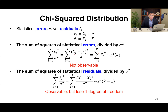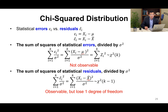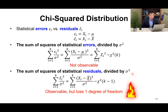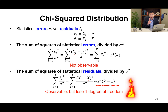However, this is generally not observable because we don't know the population mean. If we replace the population mean with the sample mean, this becomes the sum of squares of the statistic residues divided by sigma-square. This is also approximately chi-square distributed, but we lose one degree of freedom — that is k minus one degrees of freedom.